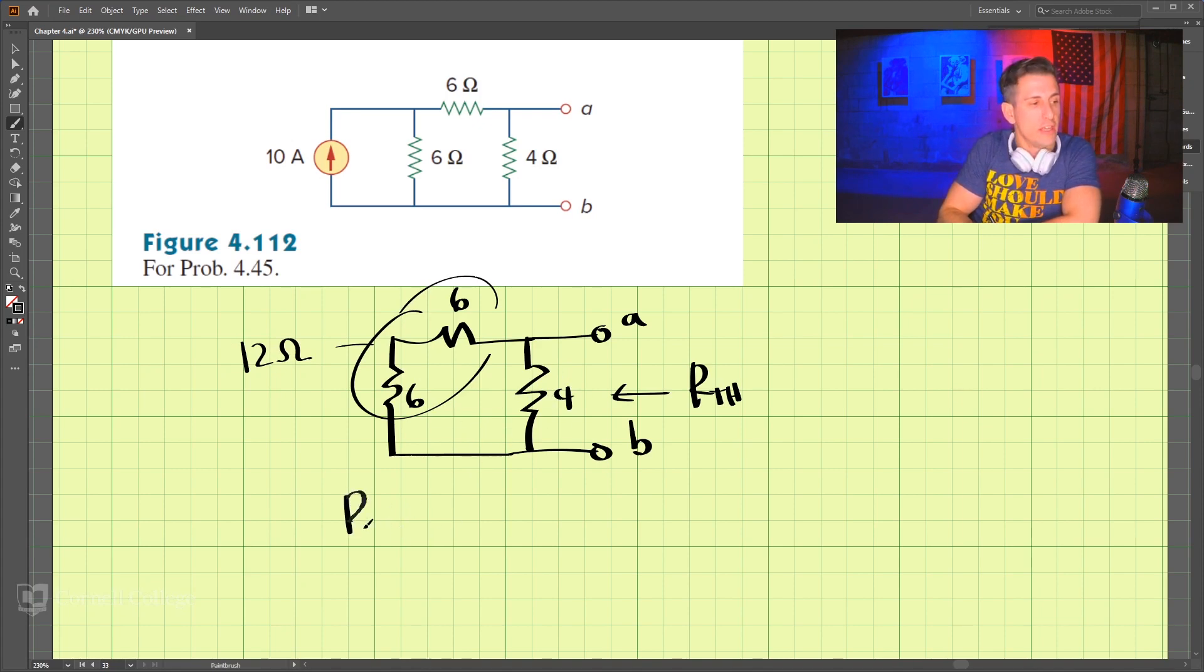So the Thevenin resistance is 12 times 4 divided by 12 plus 4. And that comes out to 48 divided by 16. And I believe that is 3 ohms.